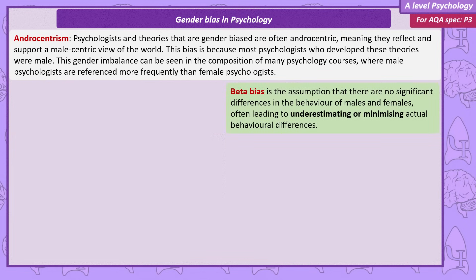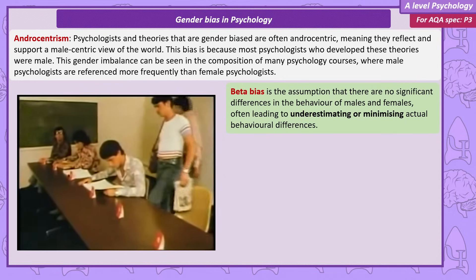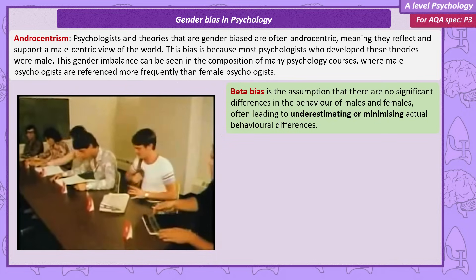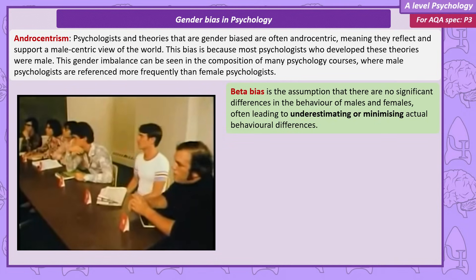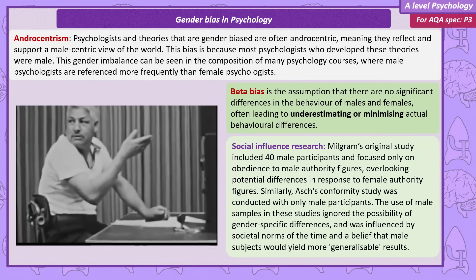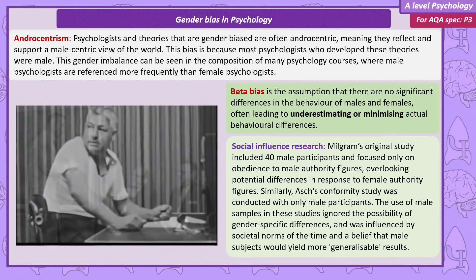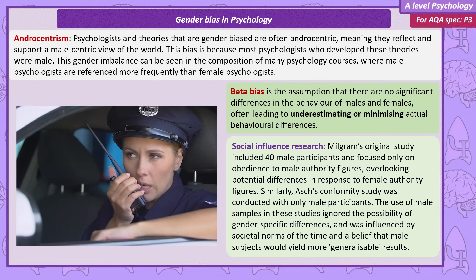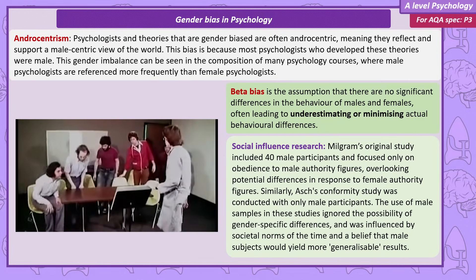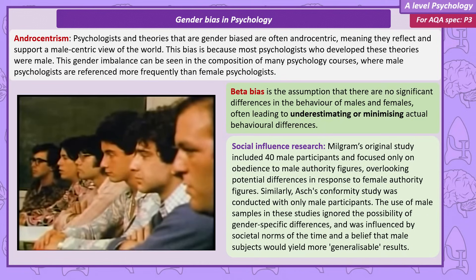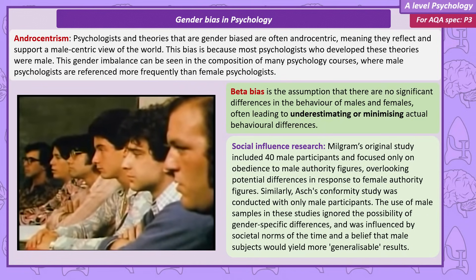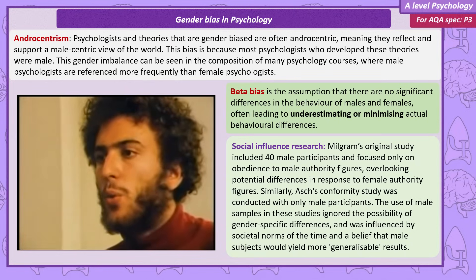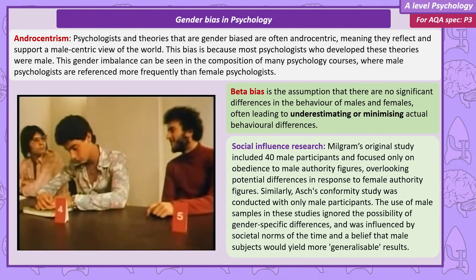Beta bias is the assumption that there's no difference in the behaviour of males and females, potentially underestimating or minimising behavioural differences. Often historical research used all-male samples and assumed the findings would also apply equally to females. We can use two examples from social influence to explain beta bias. In Milgram's original research, all 40 participants were male. Milgram also only studied obedience to male authority figures, ignoring the possibility that people might respond differently to female authority figures. Asch also only used male participants in his study on conformity. In both cases, the choice to use male-only samples was partly due to society's norms at the time, and partly due to a belief in scientific circles that male subjects would provide more generalisable results.